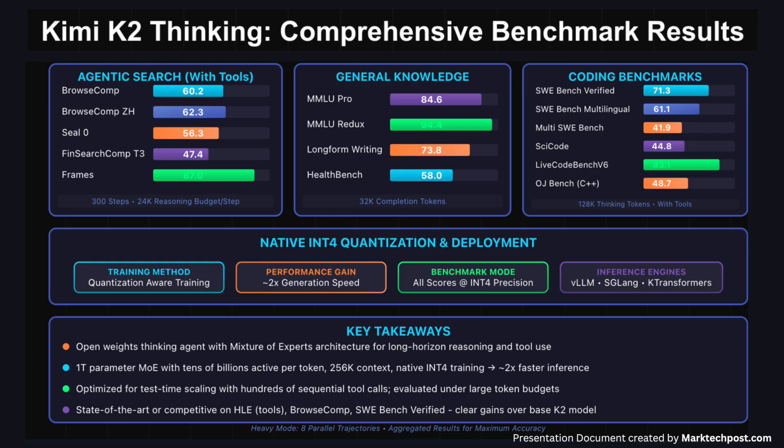The Moonshot team also defines a heavy mode that runs 8 trajectories in parallel, then aggregates them to produce a final answer. This is used in some reasoning benchmarks to squeeze out extra accuracy from the same base model.